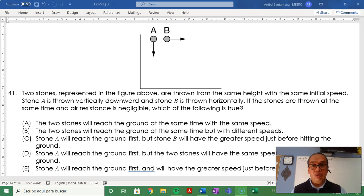41. Two stones, represented in the figure above, are thrown from the same height with the same initial speed. Stone A is thrown vertically downward and stone B is thrown horizontally. If the stones are thrown at the same time and air resistance is negligible, which of the following is true?